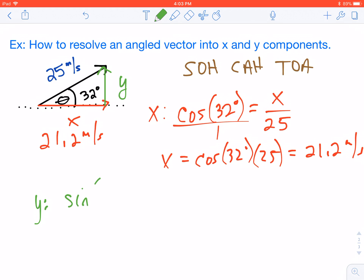The sine of 32 degrees equals y over 25. Cross-multiply. So, y is going to end up equaling the sine of 32 degrees times 25. And we get a final answer of 13.2 meters per second. All right.